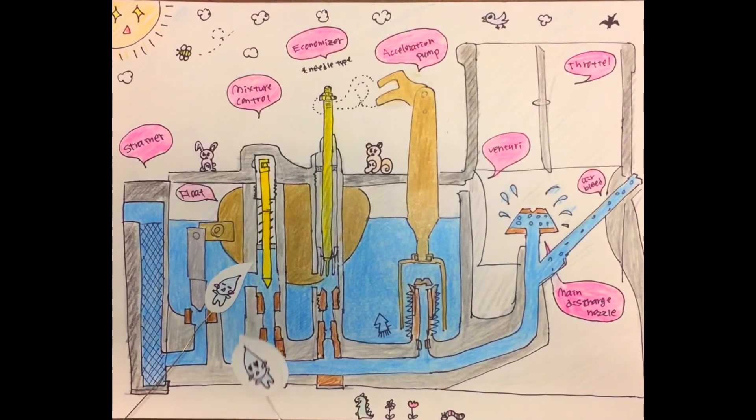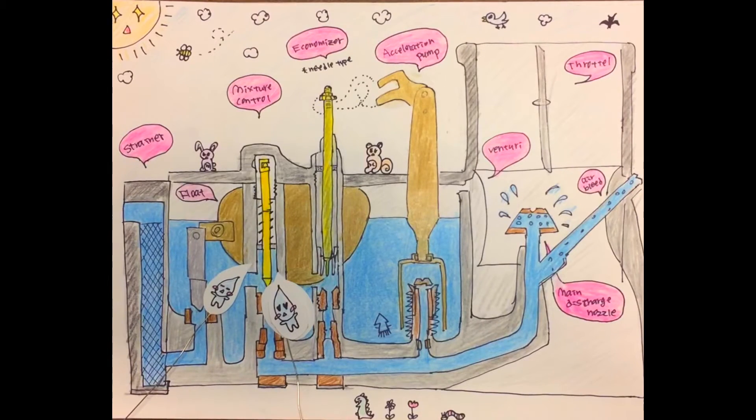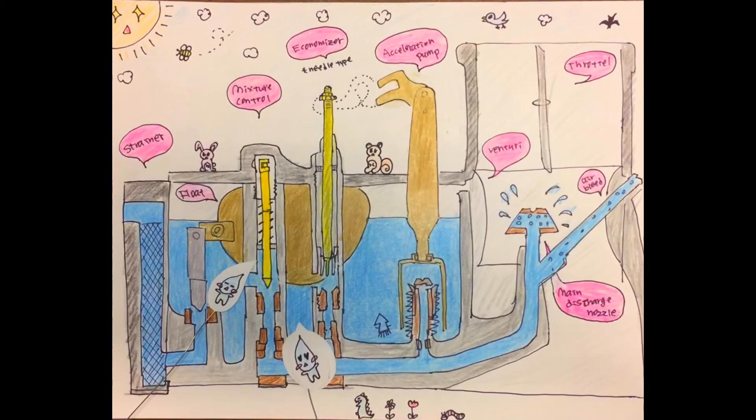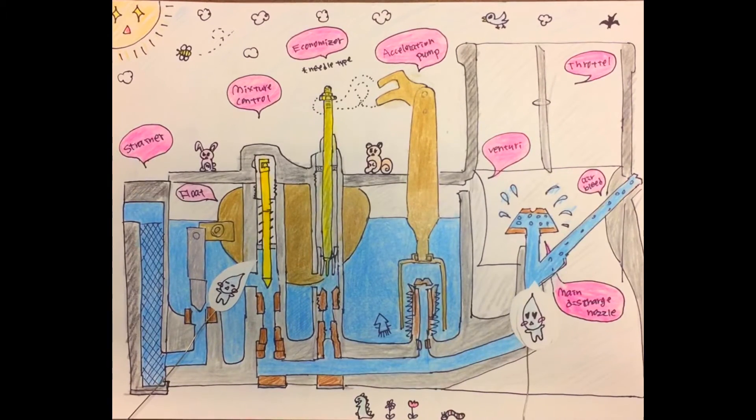From normal cruise condition, fuel flows through the mixture control and main metering jet. Once the proper amount of fuel is metered, the differential air pressure in the chamber and venturi draws and discharges fuel from the main discharge nozzle. Air makes better fuel vaporization and also breaks surface tension.